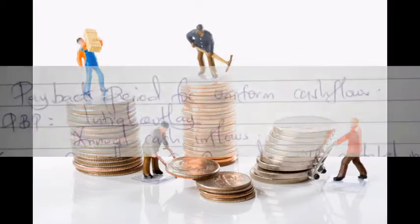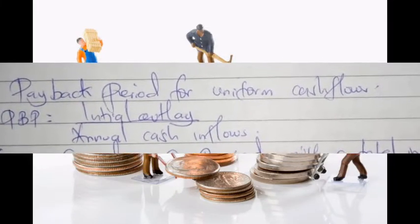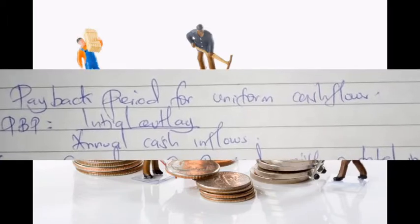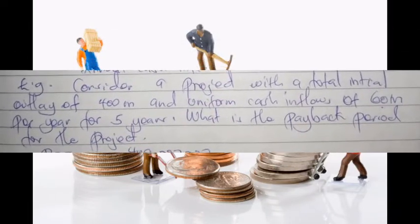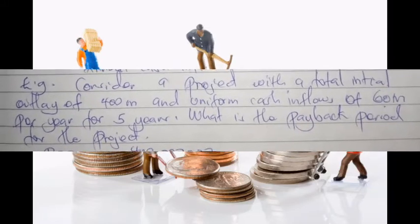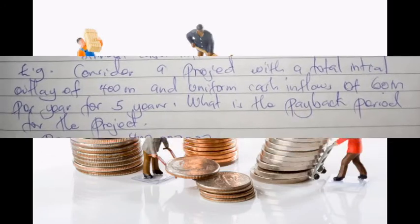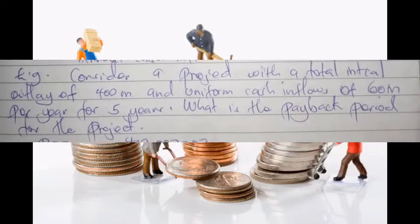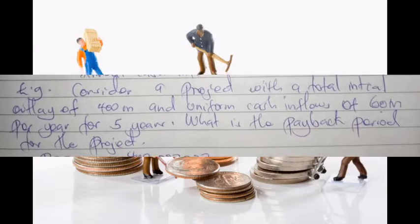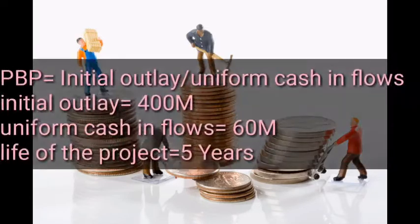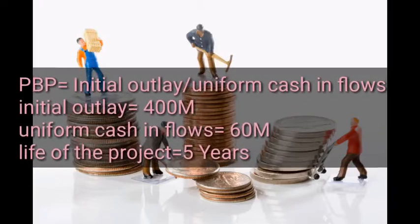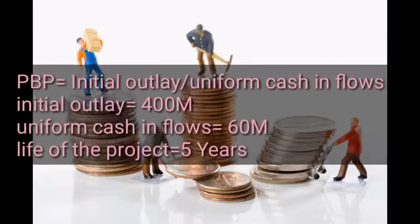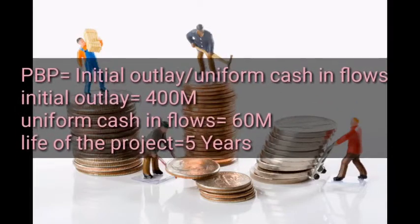We start with the payback period for uniform cash flows. The formula is: initial outlay divided by annual cash inflows. Consider a project with a total initial outlay of 400 million and uniform cash inflows of 60 million per year for five years. What is the payback period? From our question, the initial outlay is 400 million and uniform cash inflows are 60 million, with a project life of five years.